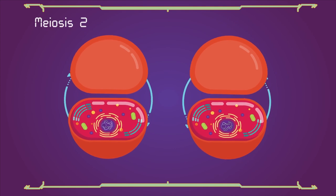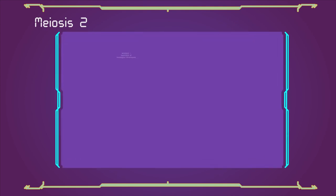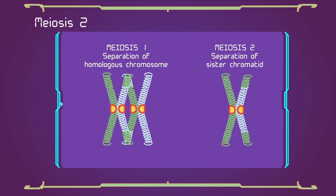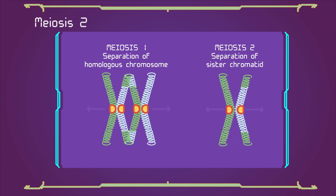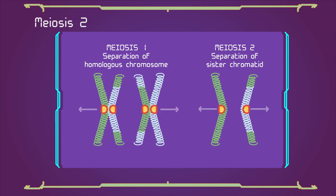Meiosis 2: Meiosis 2 is the second meiotic division, and usually involves equational segregation, or separation of sister chromatids. Mechanically, the process is similar to mitosis.